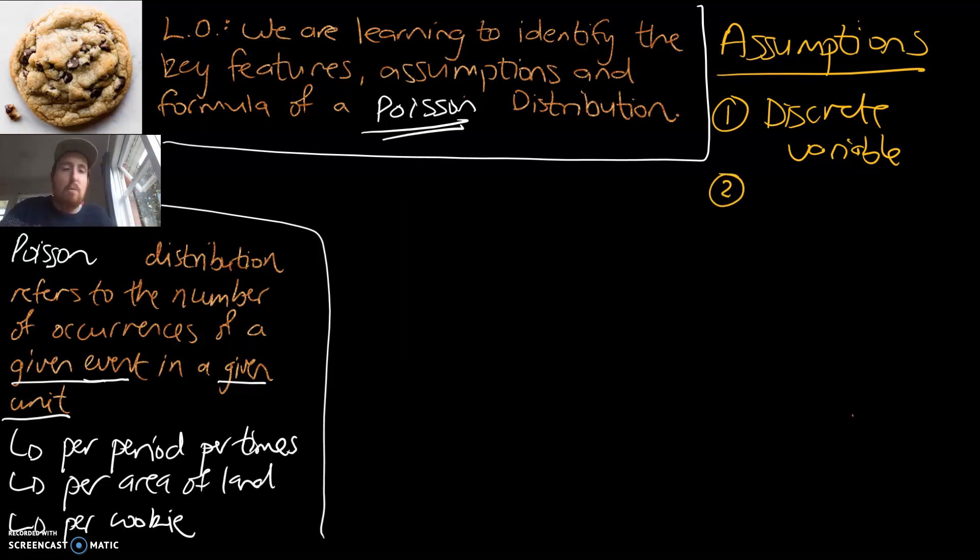Number two, the second assumption: the events must be independent of each other. So the idea of the presence of one dandelion doesn't mean there's going to be other dandelions or doesn't affect other dandelions. Or the fact that that red Ford drove by doesn't make other cars drive by as well.